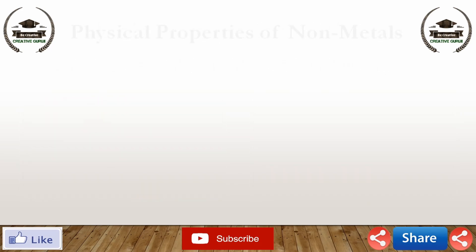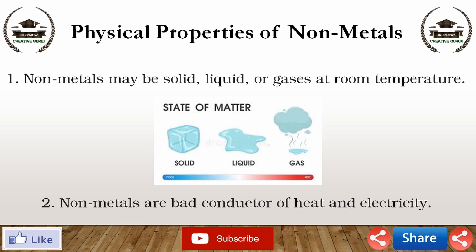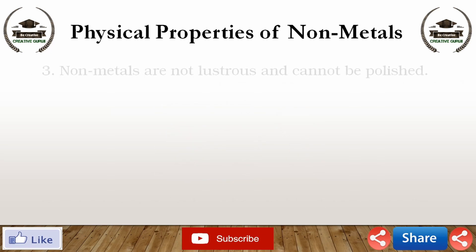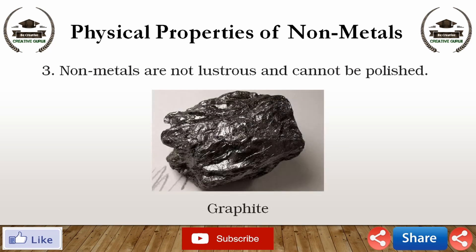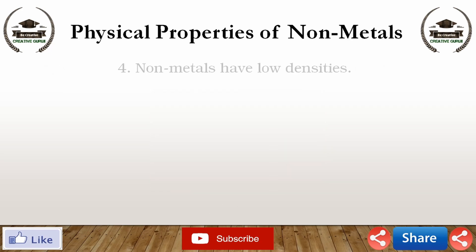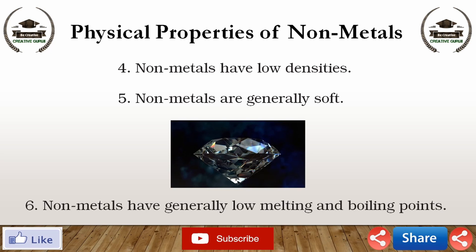Now moving to the physical properties of non-metals. First, non-metals may be solid, liquid or gas at room temperature. Second, non-metals are bad conductors of heat and electricity, except graphite, which is a good conductor because of the presence of free electrons. Third, non-metals are not lustrous and cannot be polished, except graphite and iodine, which are lustrous non-metals. Fourth, non-metals have low densities. Fifth, non-metals are generally soft — exception: diamond, an allotropic form of non-metal carbon, is the hardest natural substance known. Sixth, non-metals have generally low melting and boiling points.